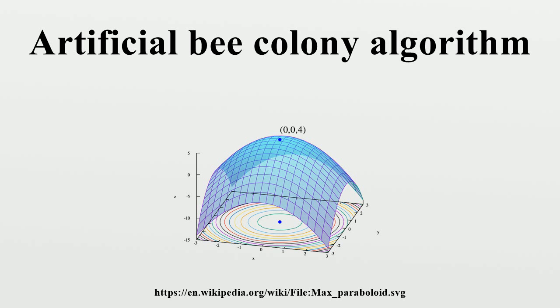In the ABC algorithm, there are three types of bees: employed bees, onlooker bees, and scout bees. The employed bees search food around the food source in their memory. Meanwhile they share the information of these food sources to the onlooker bees. The onlooker bees tend to select good food sources from those found by the employed bees. The food source that has higher quality will have a large chance to be selected by the onlooker bees than the one of lower quality.